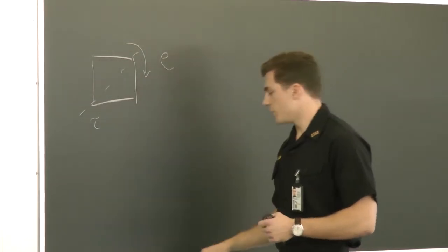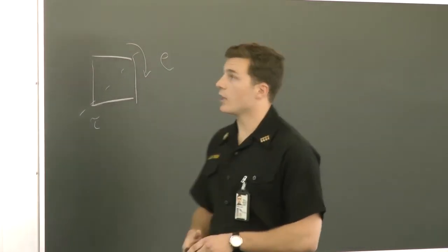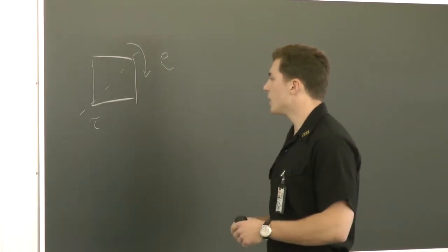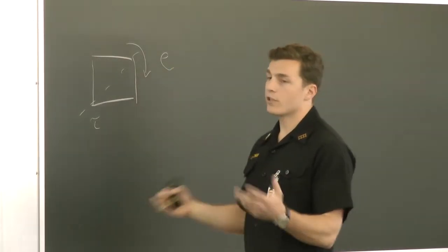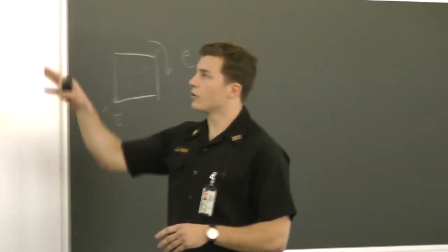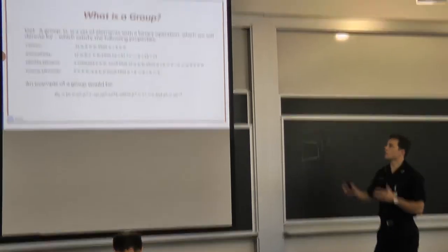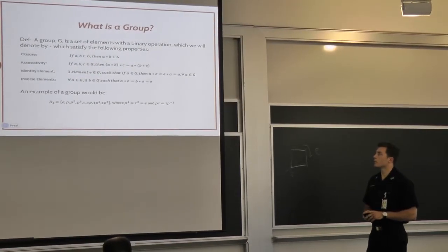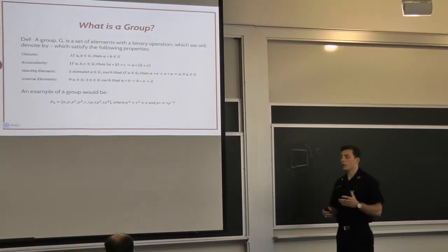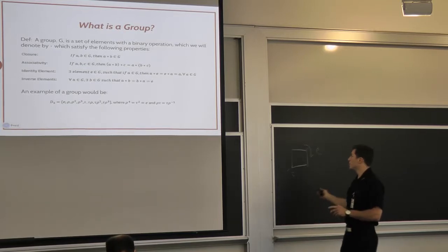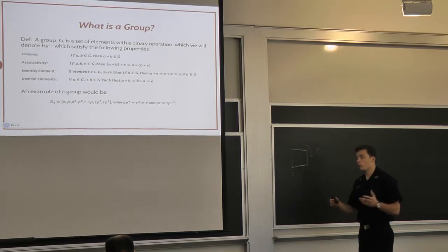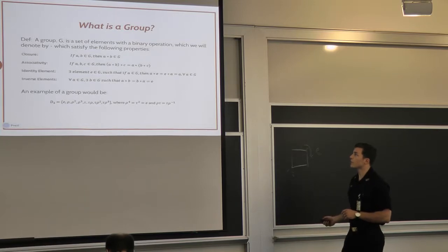So obviously if you rotate the square four times, you're going to get the identity element. And if you take a reflection and apply it twice, you'll get the same square again. So that's where you get the identity elements, rho to the fourth, tau squared is the identity element. You also get this peculiar relationship that rho tau is tau rho inverse, or rho tau is tau rho cubed. So apply the rotation and then reflection, or the reflection and three rotations, you'll get the same thing.